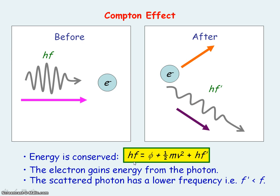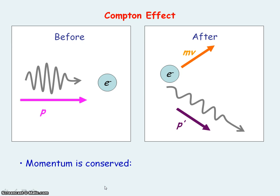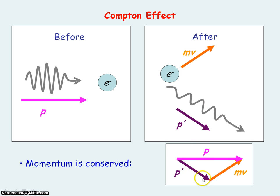Energy must be conserved in this process: you have the original photon energy of the incident X-ray photon. Phi represents the energy needed to remove an electron from the atom. The ejected electron has some kinetic energy, and you also have the scattered X-ray photon, which has a lower frequency or a longer wavelength because it has less energy compared to the original X-ray photon. The photon has to scatter in order to conserve momentum, so the total momentum after the collision must equal the total momentum before the collision.